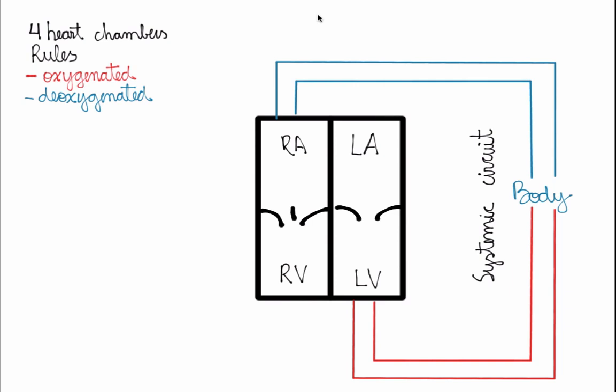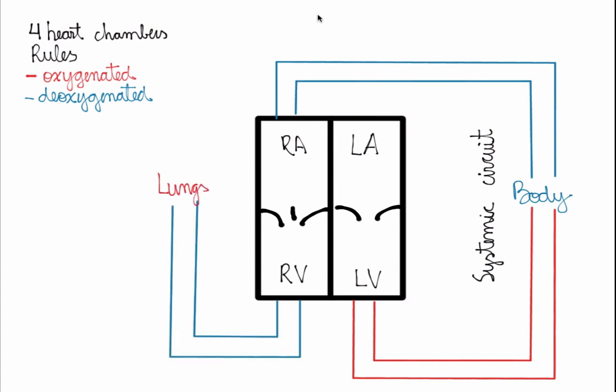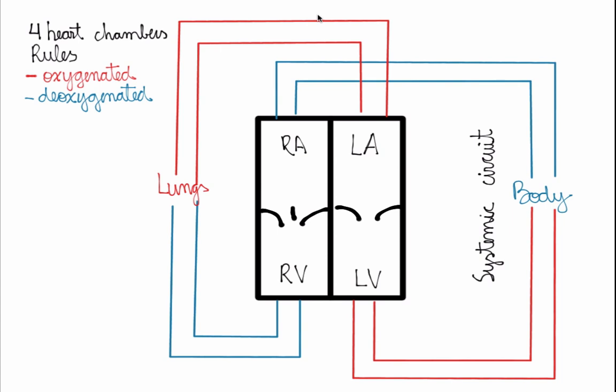You have a double circuit in the heart: the systemic circuit and the pulmonary circuit. In the pulmonary circuit, blood arrives at the right atrium, is pumped into the right ventricle, and then pumped into the lungs. It's deoxygenated blue blood, and the lungs convert it into oxygen-rich blood, completing the pulmonary circuit.